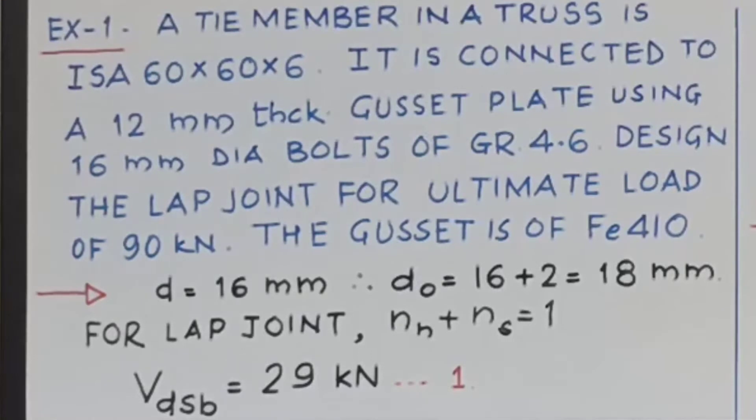This is a very simple example. Now what are the things given in this? Diameter is given 16 mm, so diameter of the hole is 16 plus 2, that is 18 mm.